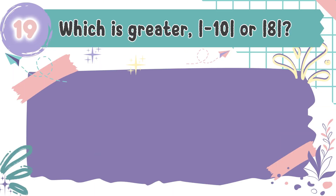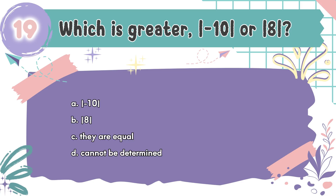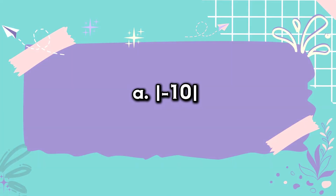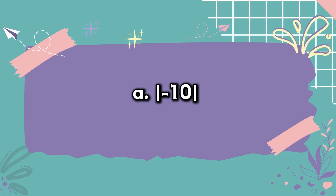Question number 19: Which is greater — the absolute value of negative 10 or the absolute value of 8? The choices are A. The absolute value of negative 10, B. The absolute value of 8, C. They are equal, D. Cannot be determined. The correct answer is A. The absolute value of negative 10 becomes 10, and 10 is greater than 8.